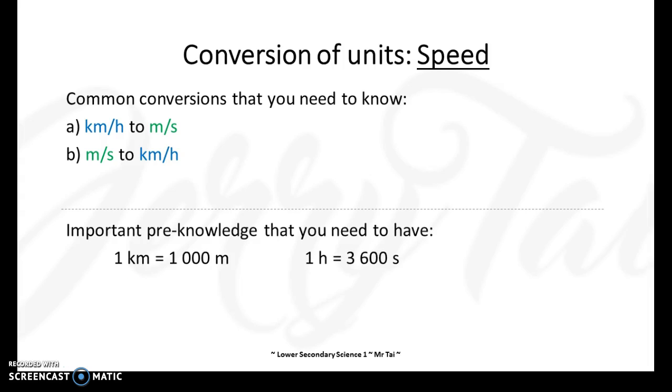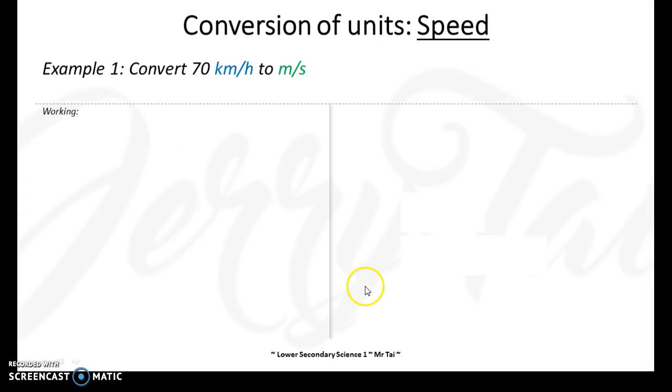You need to have these two pre-knowledge. One kilometer equals to 1,000 meters, one hour equals to 3,600 seconds. And one meter is actually one over 1,000 of a kilometer, one second is one over 3,600 of an hour. Now, let's look at the first example.